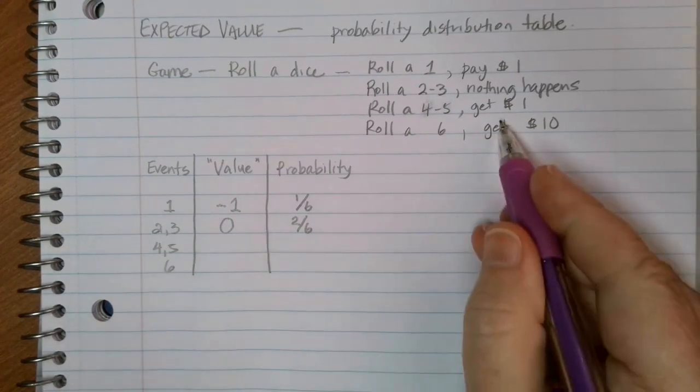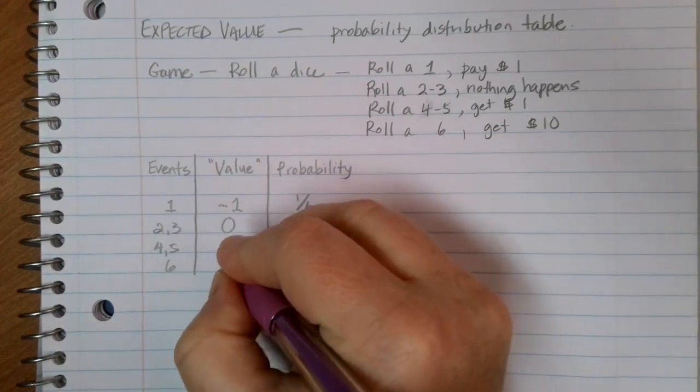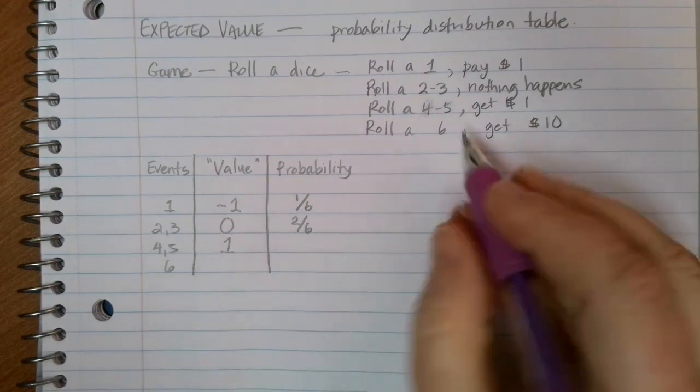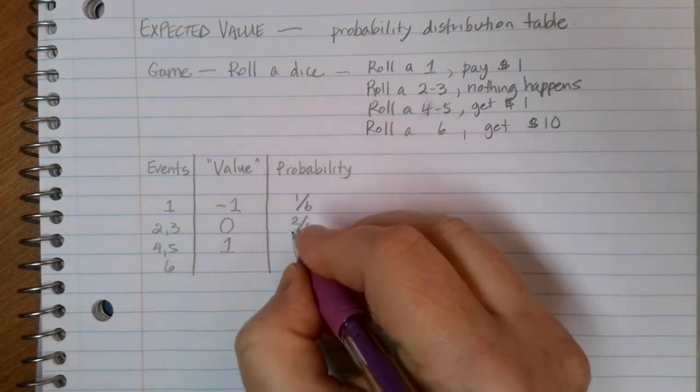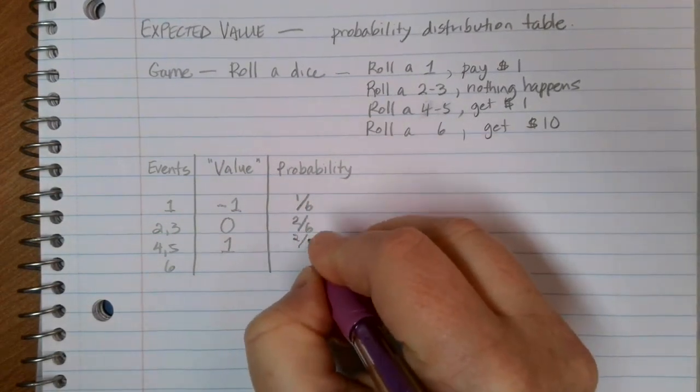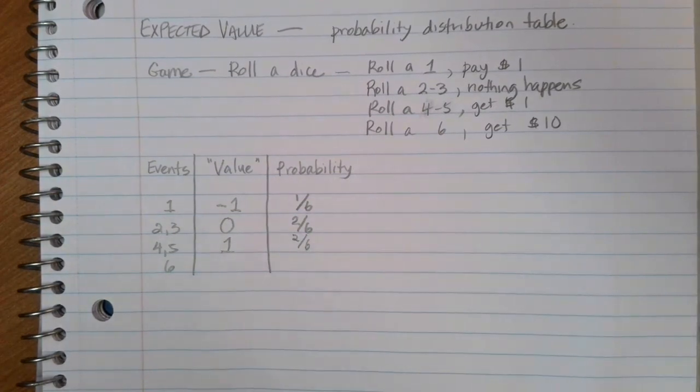If I roll a four or five, I'm going to get one dollar. This time, it's going to be a positive one because there's money coming in. I have two different possibilities of things I could roll out of the six numbers on a dice. So the probability for that is two out of six.